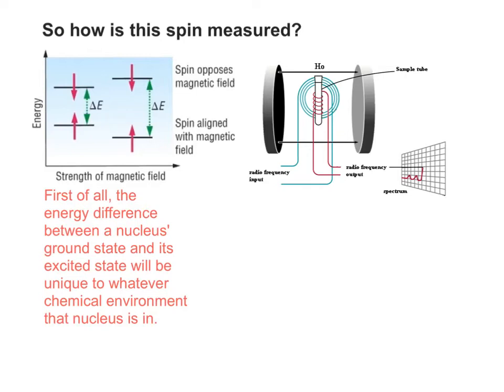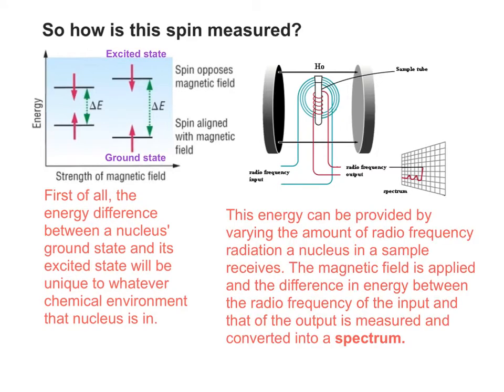Depending on the chemical environment that nucleus is in, this difference will have a signature value. The energy that we use to put a nucleus into an excited state from a ground state, if you provide exactly that amount of energy using radiofrequency radiation, then the nucleus will start to resonate, or flip between the two states, excited and ground state.